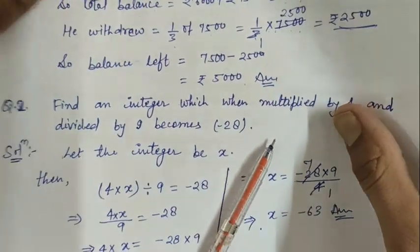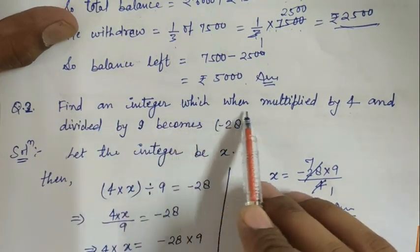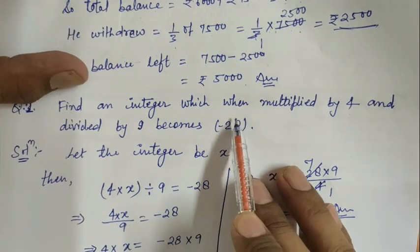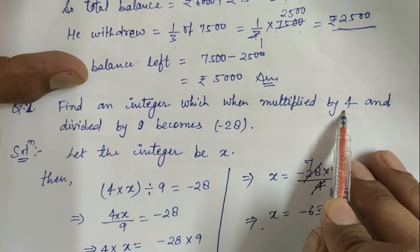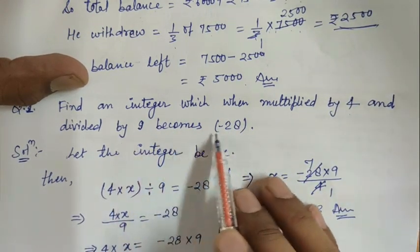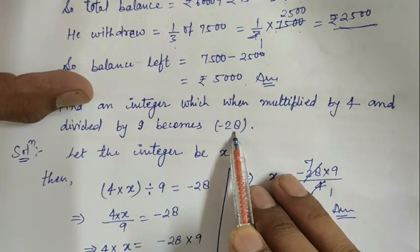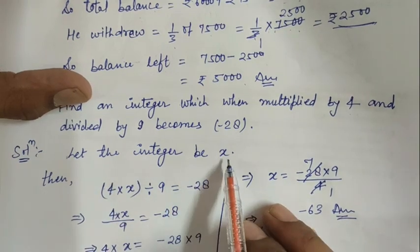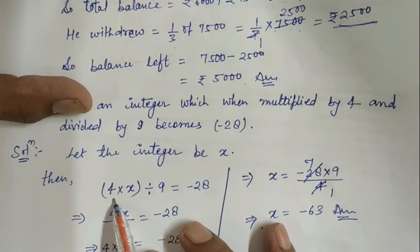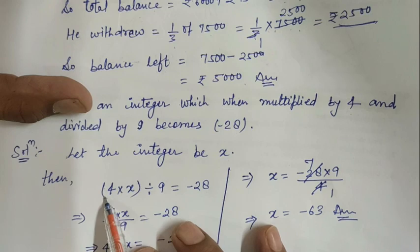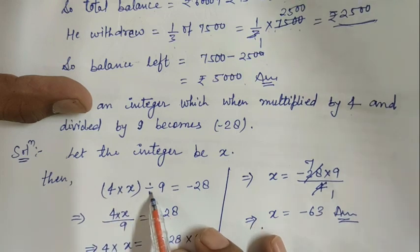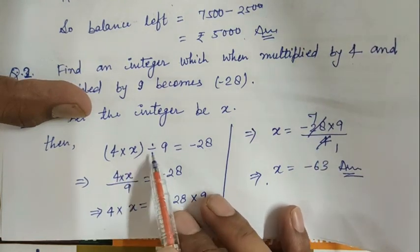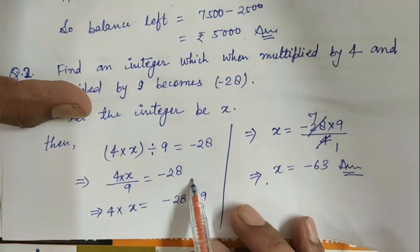Third question: Find an integer which when multiplied by 4 and divided by 9 becomes -28. Find an integer which when multiplied by 4 and divided by 9 becomes -28. So we have to assume that the integer is x. According to the question, we have to multiply the integer x by 4, then divide by 9: (4 × x) / 9 = -28.